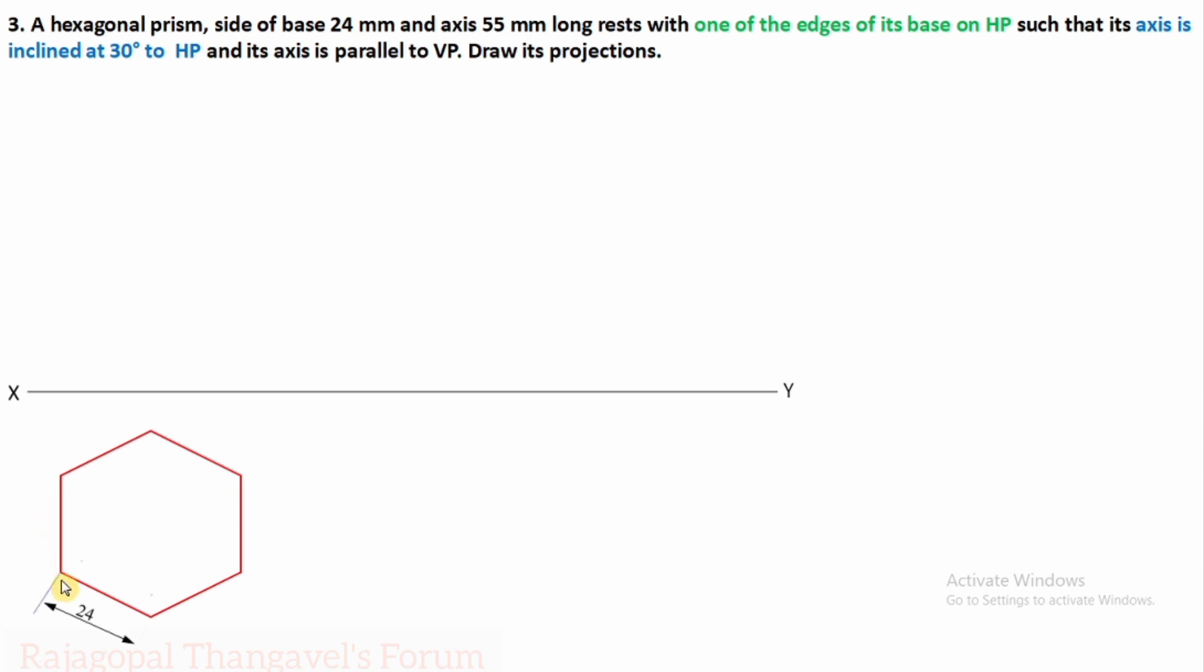This is the position of the hexagon. Give notation. Side is 24 mm and give notation as two hexagons - one at the top face, another one at the base or bottom face. Always the bottom face is invisible. Base is invisible from the top. So 1, 2, 3, 4, 5, 6 is the bottom face hexagon or base hexagon. Top face is A, B, C, D, E, F. We can extend the projectors from all the corners to fix the front view. Front view axis length is 55 mm. Extend and complete the longer edge and complete the front view as a rectangle.